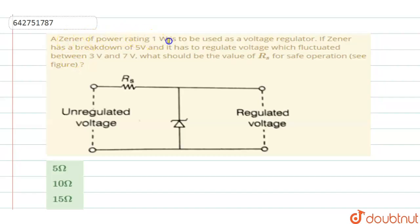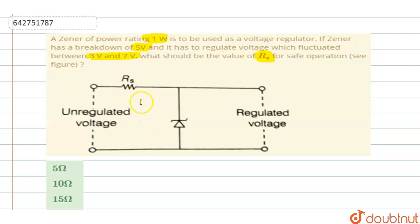A zener of power rating 1 watt is to be used as a voltage regulator. The zener has a breakdown voltage of 5 volt and it has to regulate a voltage which fluctuates between 3 volt and 7 volt. What should be the value of Rs for safe operation? They have given you an unregulated voltage. The unregulated voltage ranges between 3 volt to 7 volt, and the function of the zener is to regulate the voltage, which has a breakdown of 5 volt. What should be the resistance Rs so that you can have a safe operation of exactly 1 watt power?